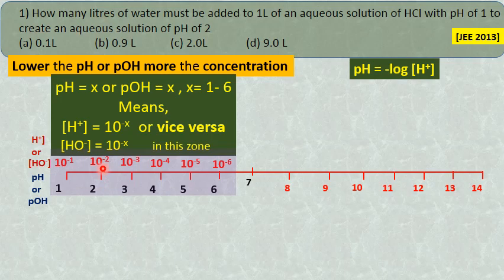Likewise, 2 means 10 raise to minus 2, 3 means 10 raise to minus 3, 6 means 10 raise to minus 6. By this means, you can tell the hydrogen or hydroxyl ion concentration by knowing the pH or POH of the solution.